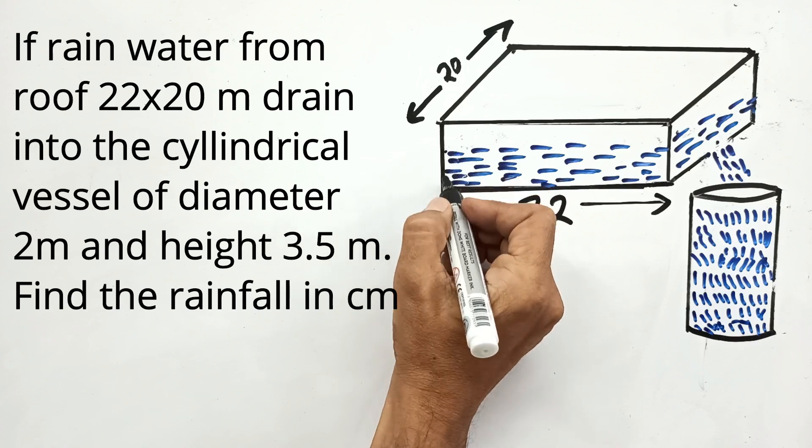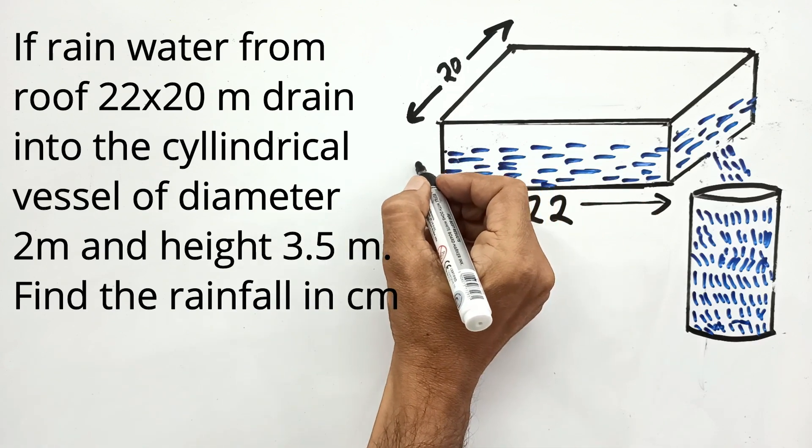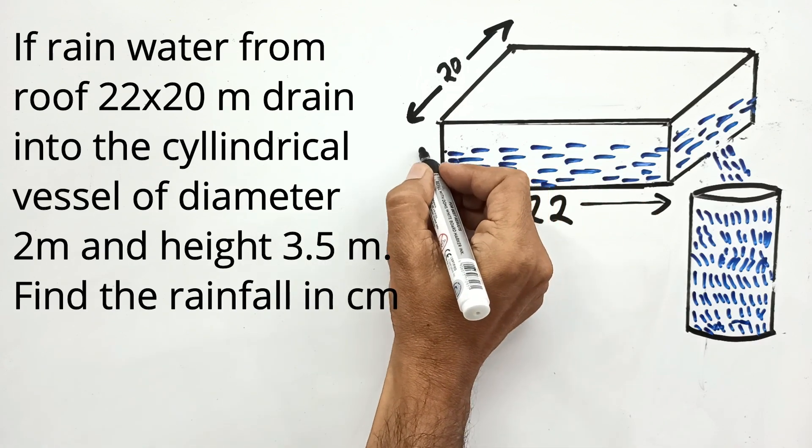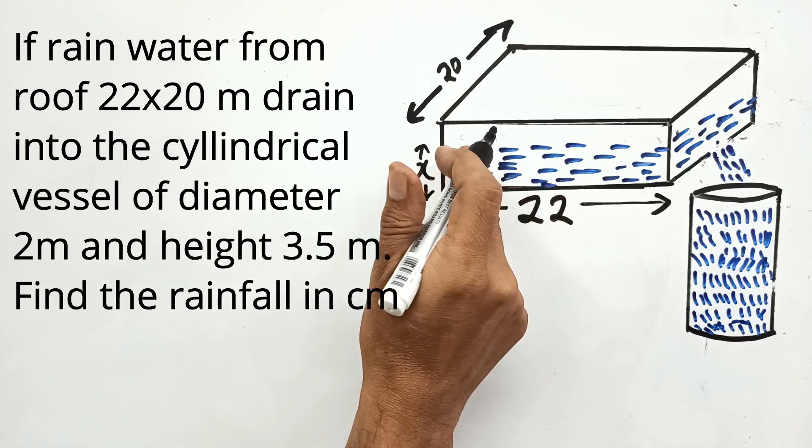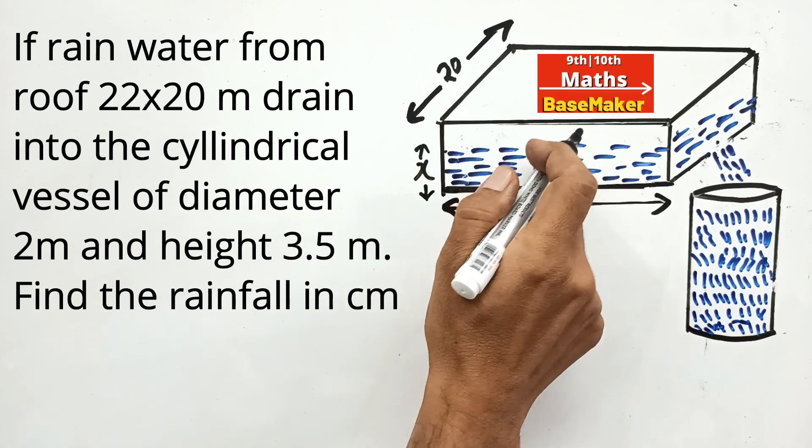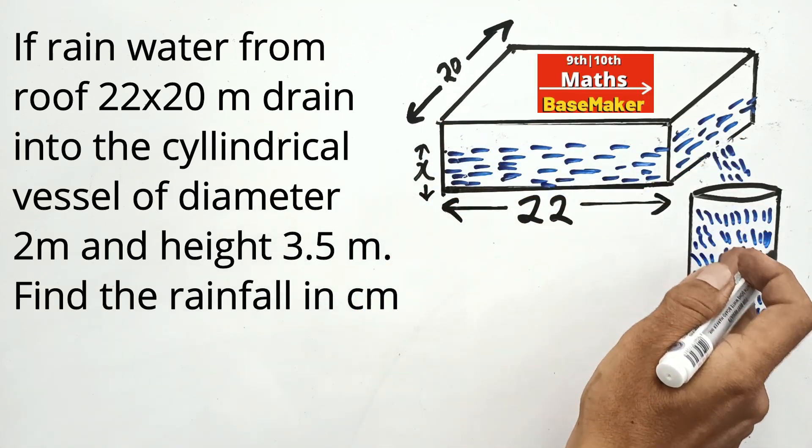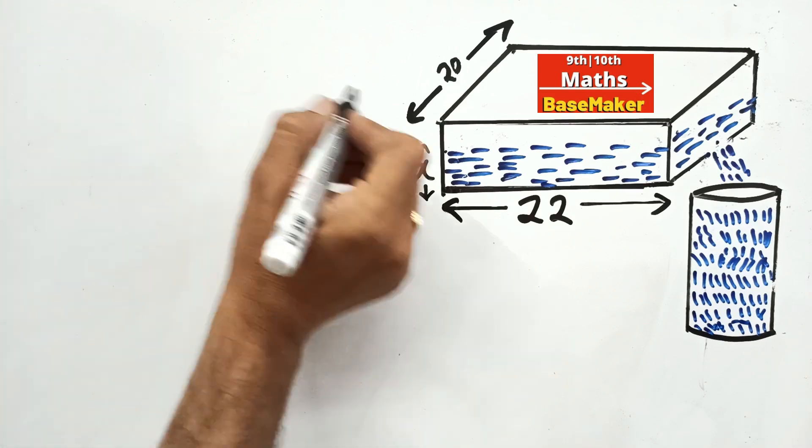So rainfall means the level of water on the roof. Let us suppose this is X. The concept here we will use is volume of water on roof is equal to volume of water in cylindrical vessel.